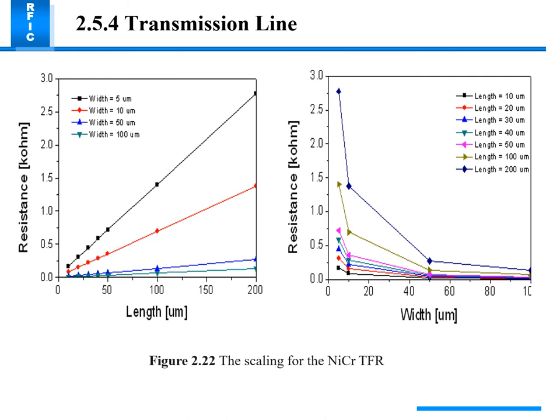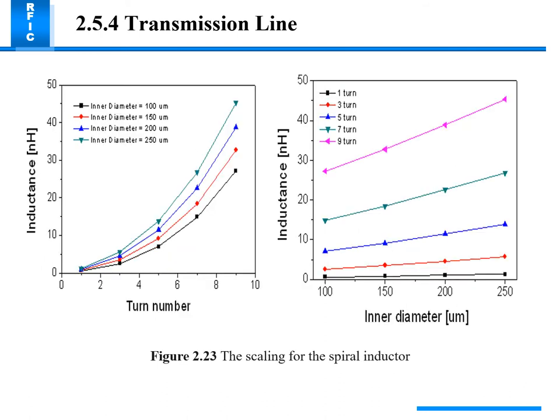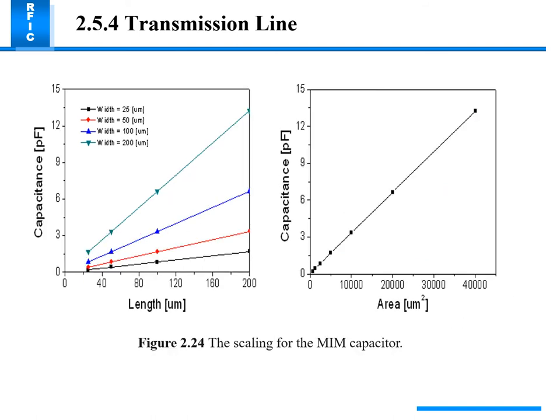Width is inversely proportional to resistance. For the spiral inductor scaling, increasing the diameter results in lower inductance; at 100 micrometers diameter, inductance is very low in nanohenries. For the MIM capacitor scaling, minimum micrometer width gives minimum capacitance in picofarads, while maximum width gives maximum capacitance.